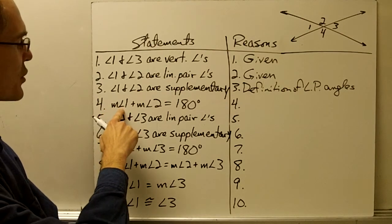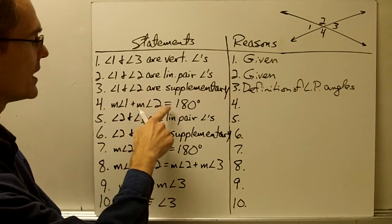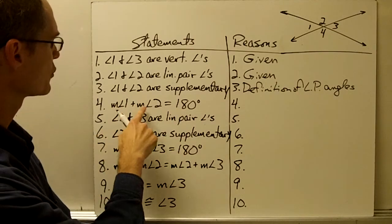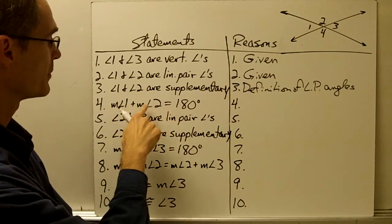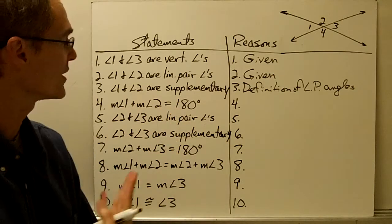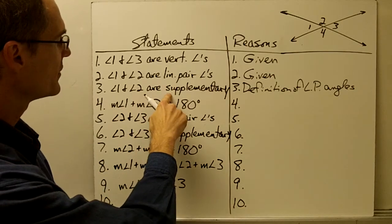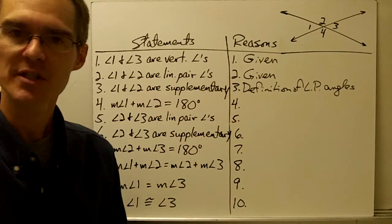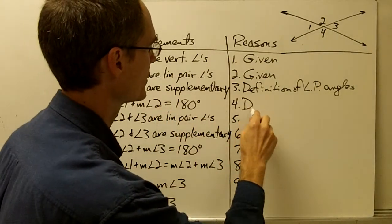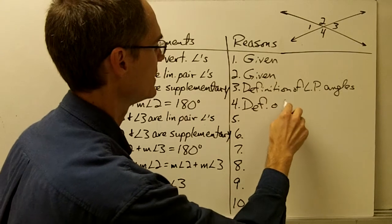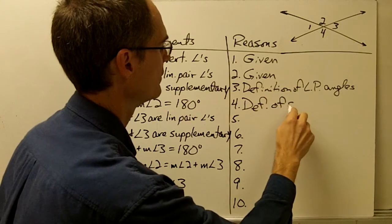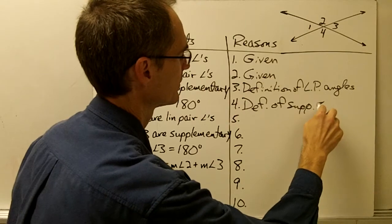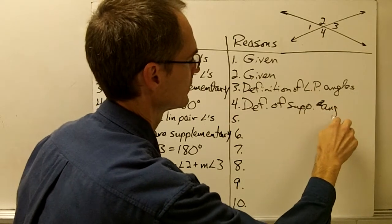Statement 4: the measure of angle 1 plus the measure of angle 2 equals 180 degrees. How do I know that the sum of measures of angles 1 and 2 equals 180 degrees? I know that because these angles are supplementary, and this is the definition of supplementary angles.